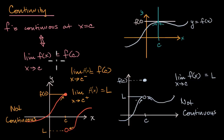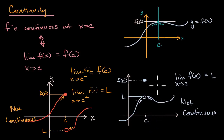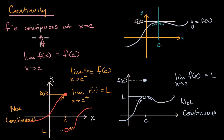Even when the two-sided limit does exist but is a different value than the value of the function, that will also not be continuous. The only situation that is going to be continuous is if the two-sided limit approaches the same value as the value of the function. If that's true, then we're continuous — and if we're continuous, that is going to be true.